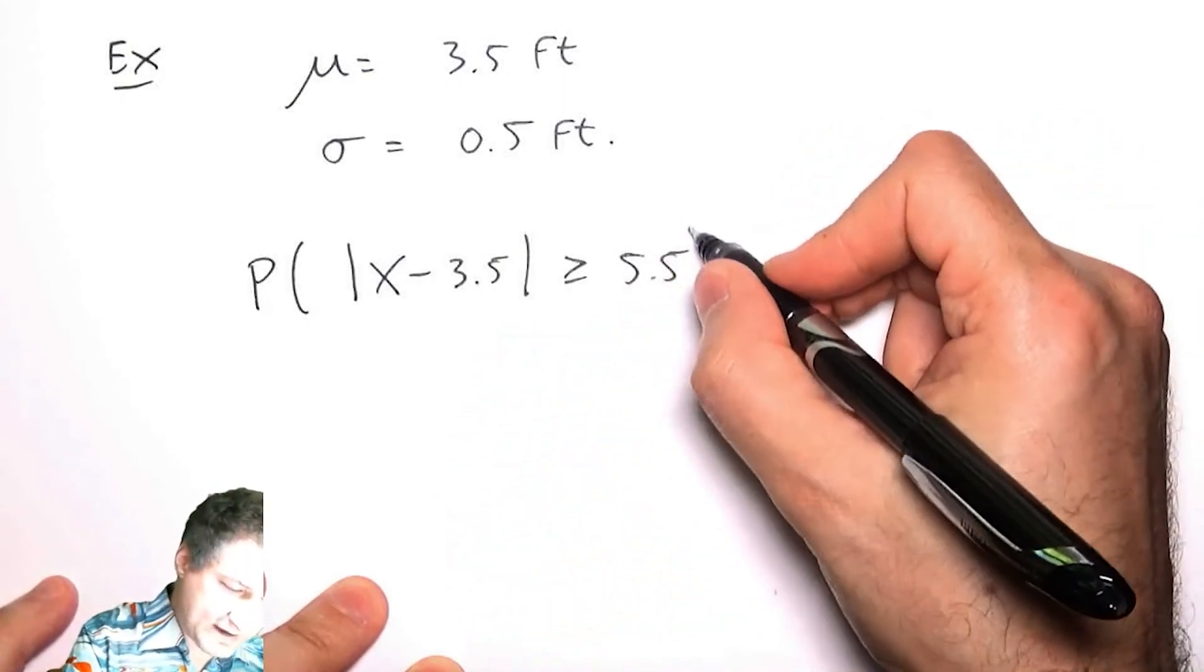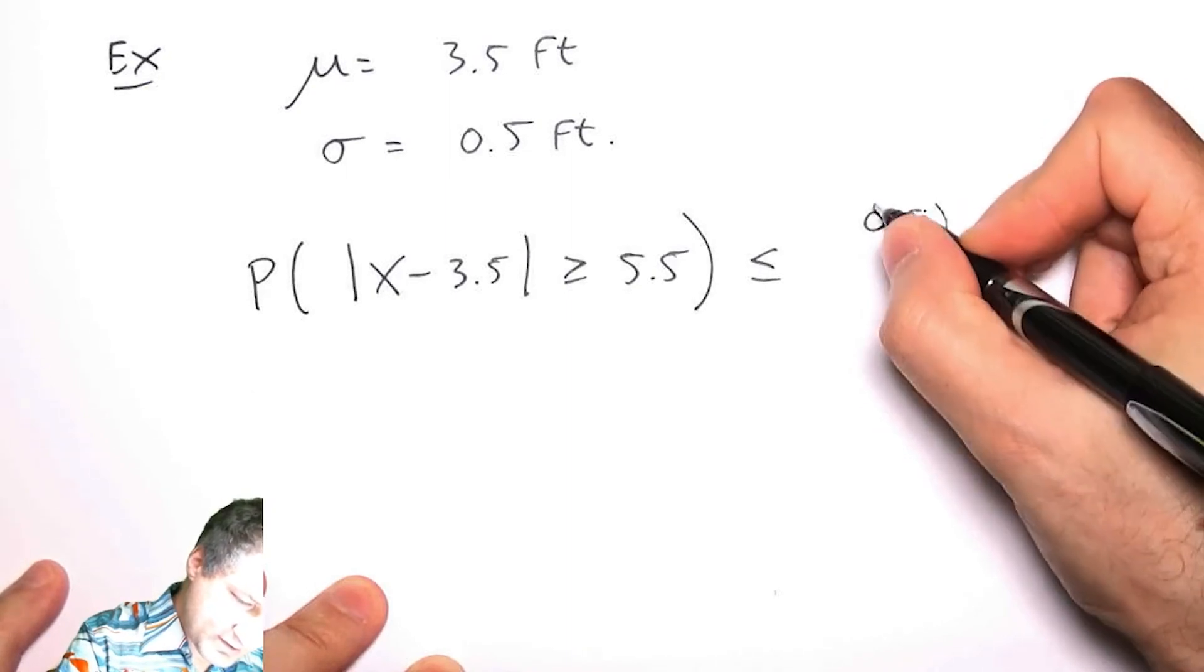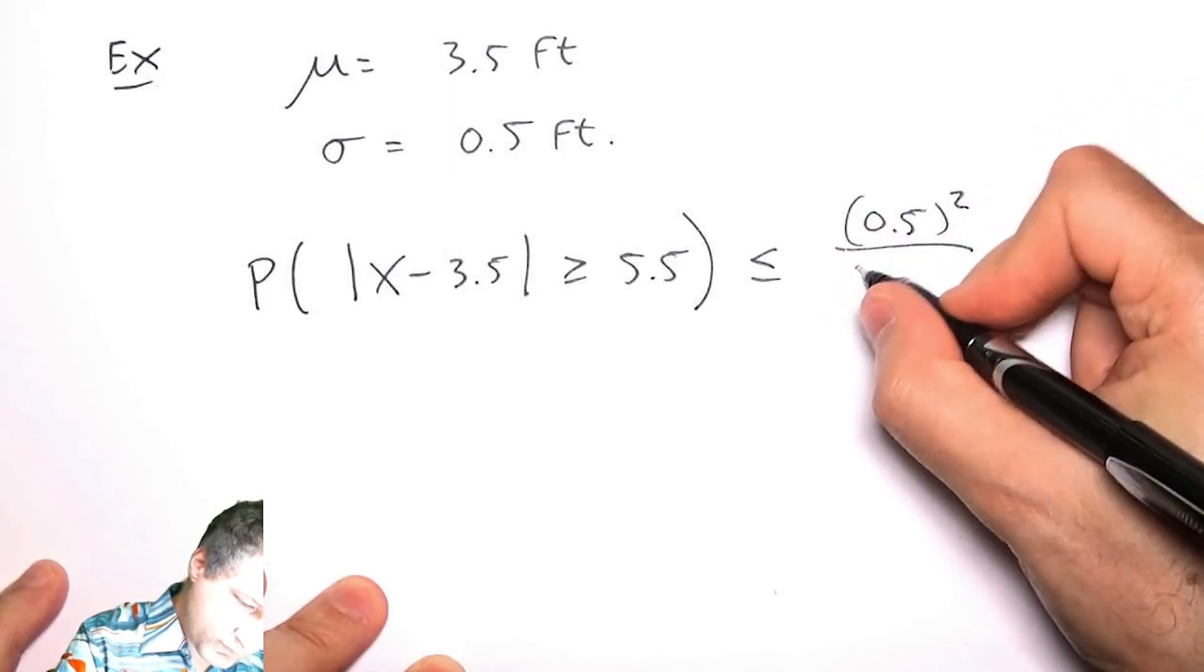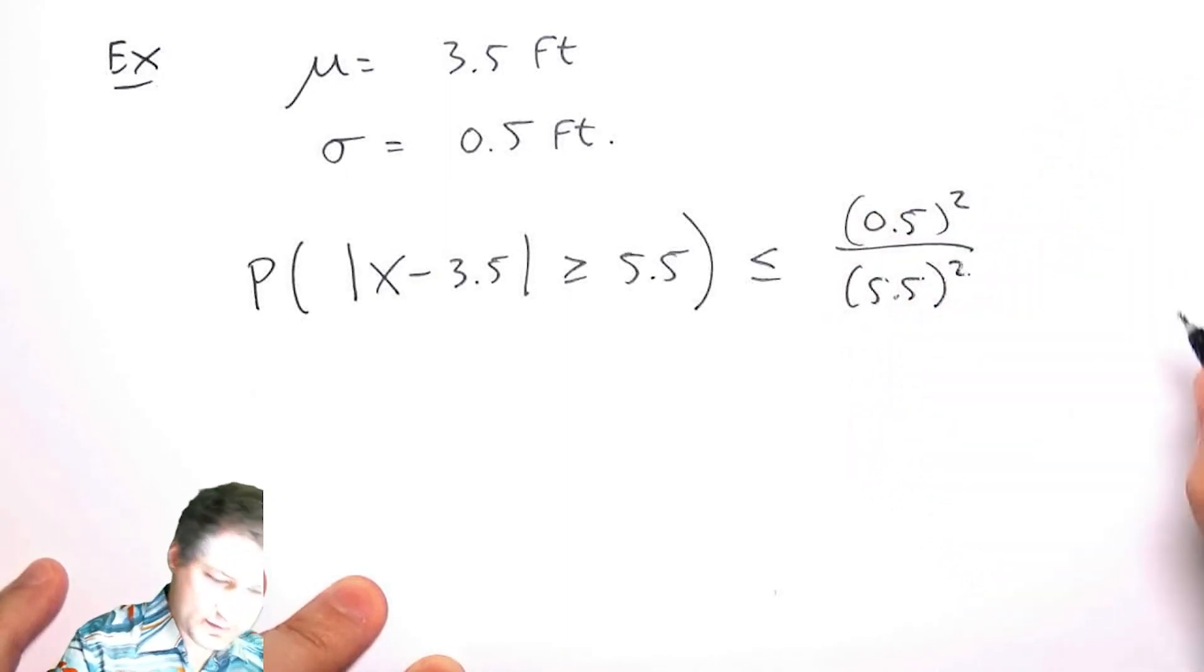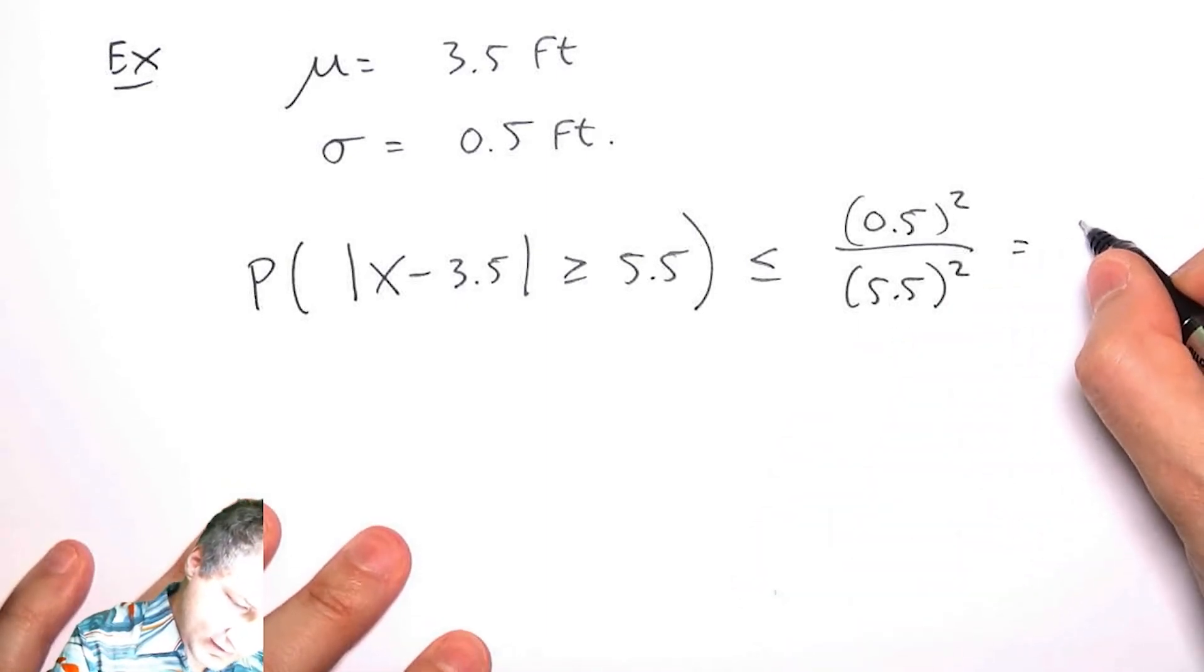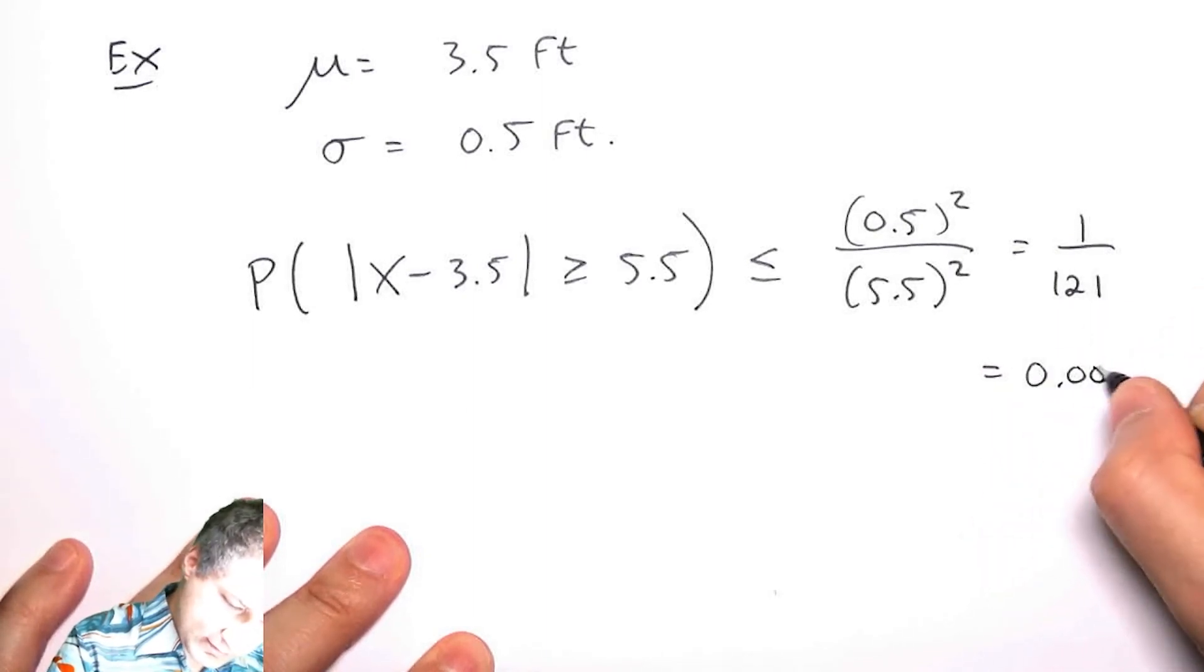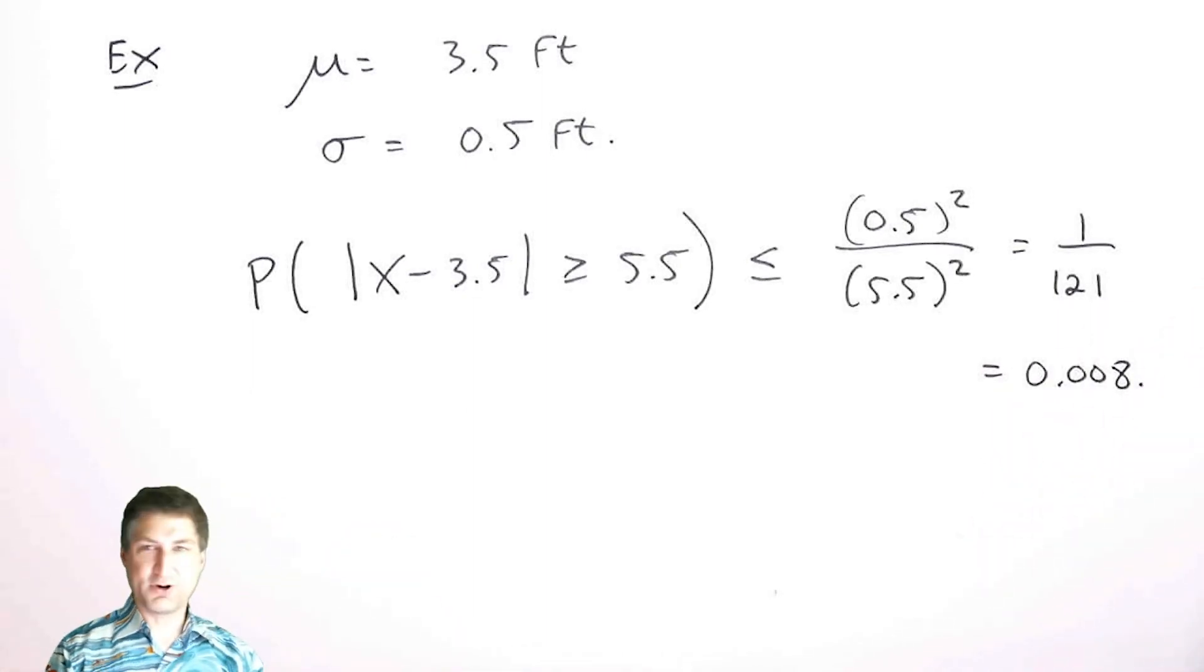I want to ask again about the nine foot tall kid. The probability that I am more than 5.5 away from the mean is the σ² over the a², so this is equal to 1 over 121, which is really small. This makes a lot more sense. This is a tighter bound and it's closer to the truth, whatever the truth may be. The truth is probably zero.